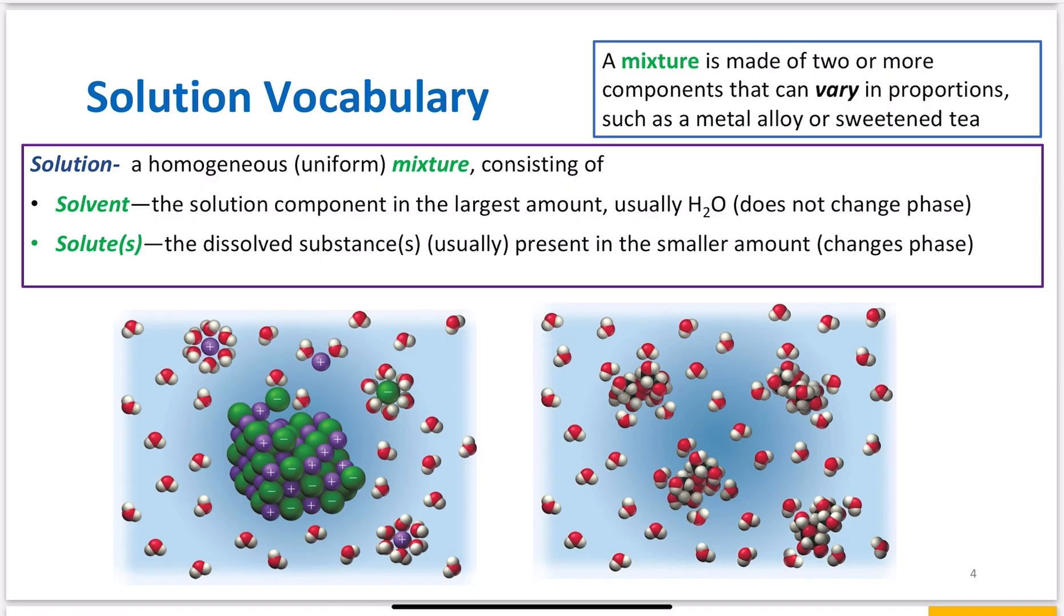So first thing you look at is, are they in different phases? If they are, the species that changes phase is not my solvent. The species that keeps the same phase is my solvent. If they're in the same phase to start, the species present in greater quantity is my solvent.